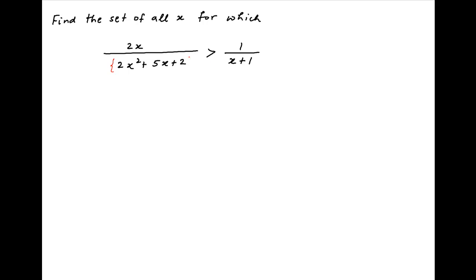The denominator of the left-hand side of this inequality can be written as 2x squared plus 4x plus x plus 2, which is equal to 2x times (x plus 2) plus (x plus 2), which is equal to (2x plus 1) times (x plus 2).